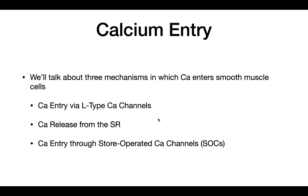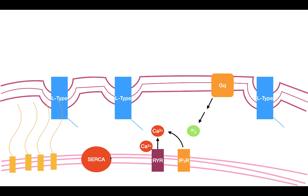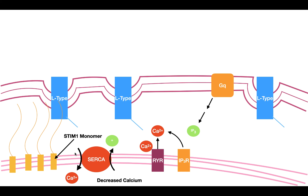The last way calcium enters the cell is through store-operated calcium channels. Inside the sarcoplasmic reticulum is a specific pump called the SERCA pump. The SERCA pump uses ATP to pump calcium against its gradient from the cytosol into the sarcoplasmic reticulum, and pumps a proton out into the cytosol. SERCA is incredibly important because much of the calcium released for contraction comes from the sarcoplasmic reticulum, so you need to maintain its calcium storage. Inside the plasma membrane of the sarcoplasmic reticulum are protein monomers called STIM1, which respond to the amount of calcium inside the SR.